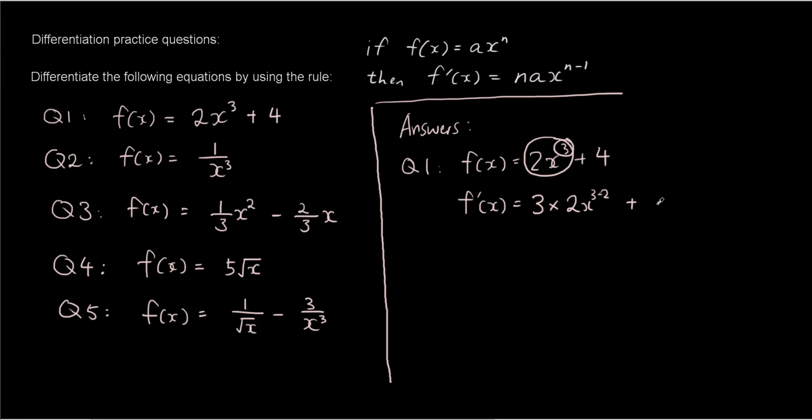Plus, 4 can be the same thing as 4x to the power of 0. If you bring the 0 to the front it becomes 0 times 4x to the power of 0, so that whole thing is gone. Whenever you have just the constant, after you differentiate it just disappears. So here we have f'(x) equals 6x to the power of 1.